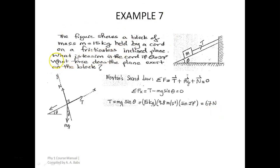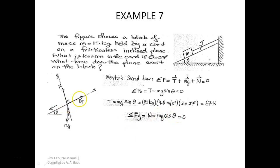The tension in the cord is 67 Newtons — that solves the first part. For the second part, what force does the plane exert on the block, we find the vertical force components. The summation of vertical forces gives: N minus mg cos theta equals zero. T does not appear here because it lies directly on the horizontal plane and has no vertical component.